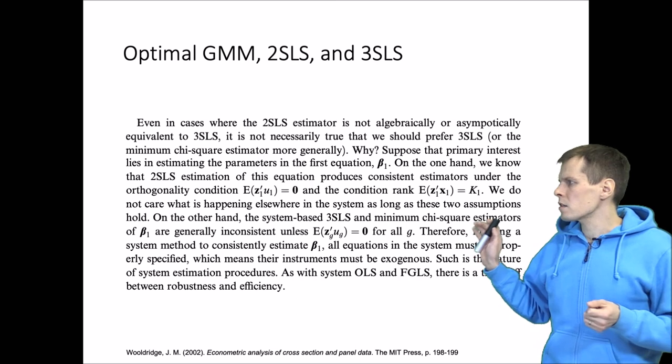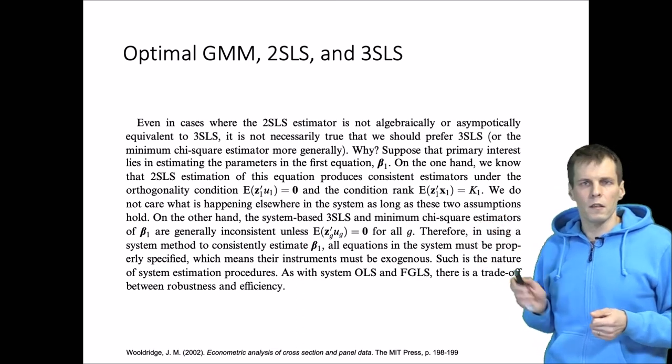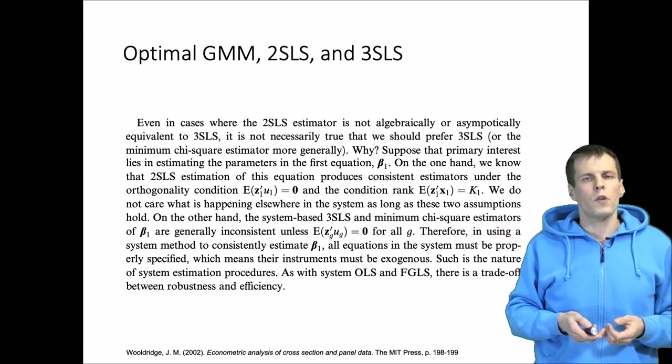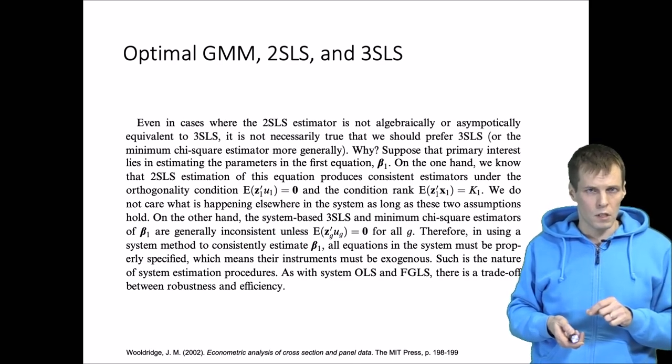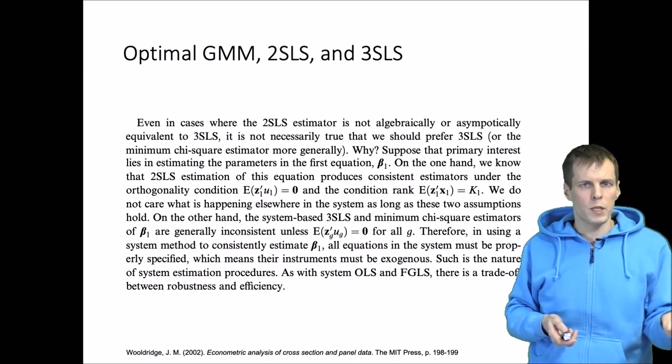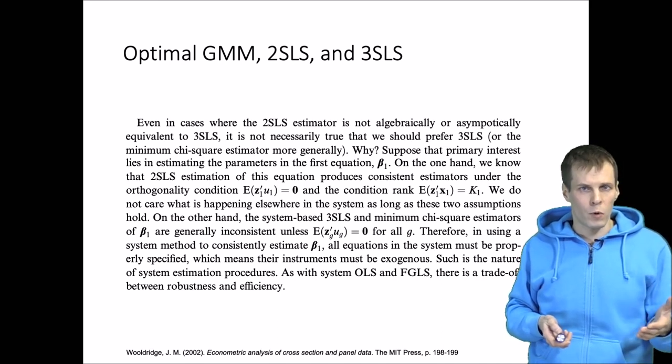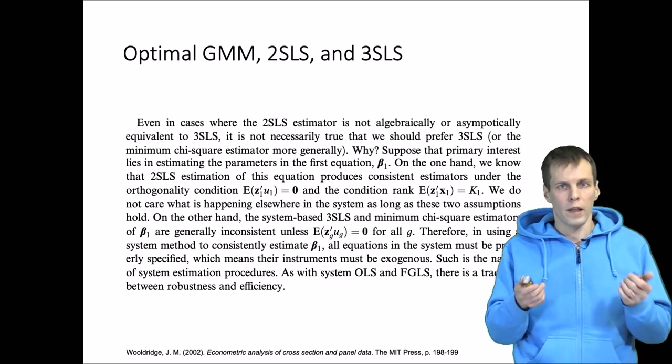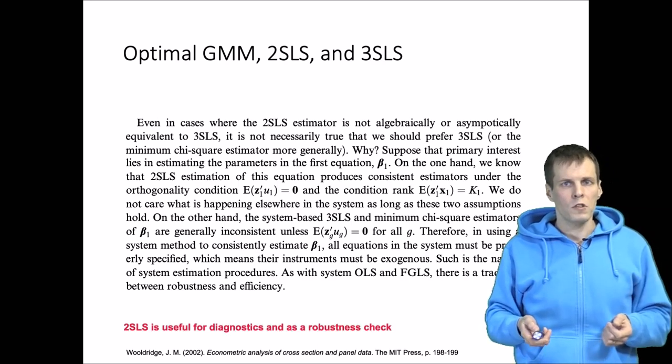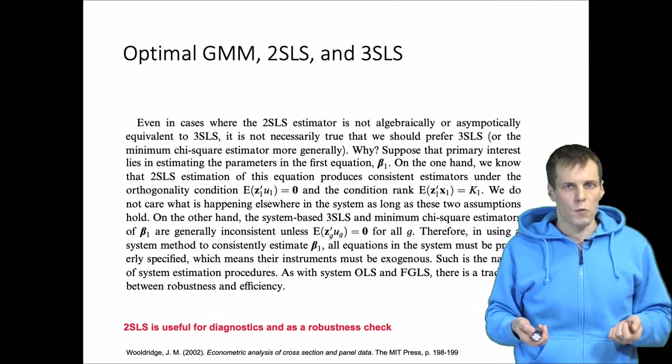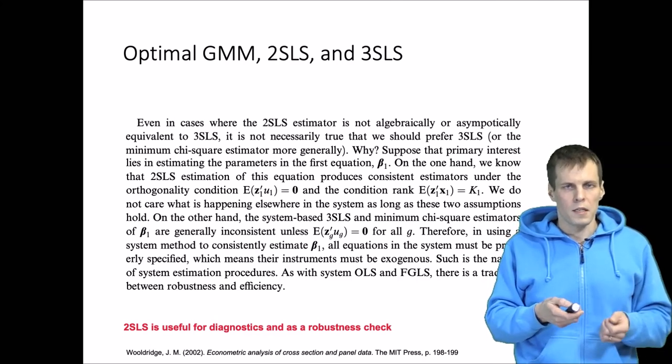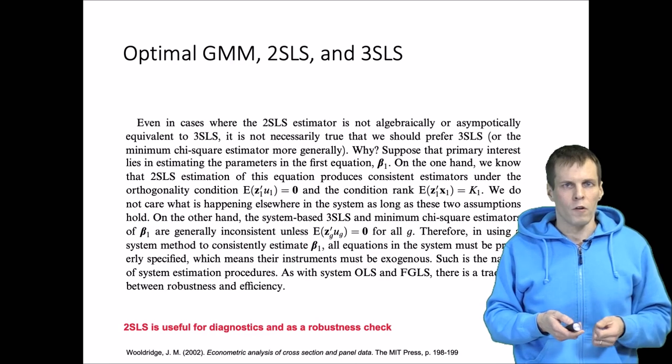The model does not need to be correctly specified for all parts because you can estimate it equation at a time using two-stage least squares. Then one small misspecification in one part of the model only affects that part of the model instead of making all estimates inconsistent. So two-stage least squares is a good technique to know for diagnostic purposes and if you want to study a small part of your larger model.